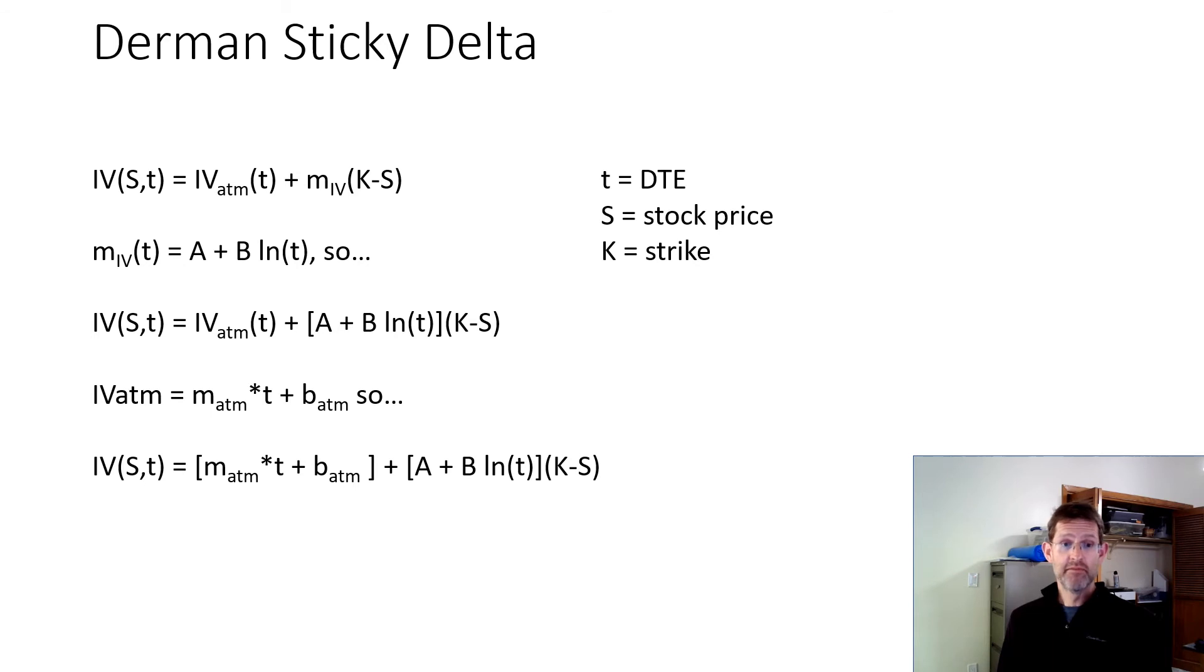m_ATM, b_ATM, A, and B. These are the four kind of best fit parameters that I have to tabulate for each particular day, each particular stock. So once you have all those,